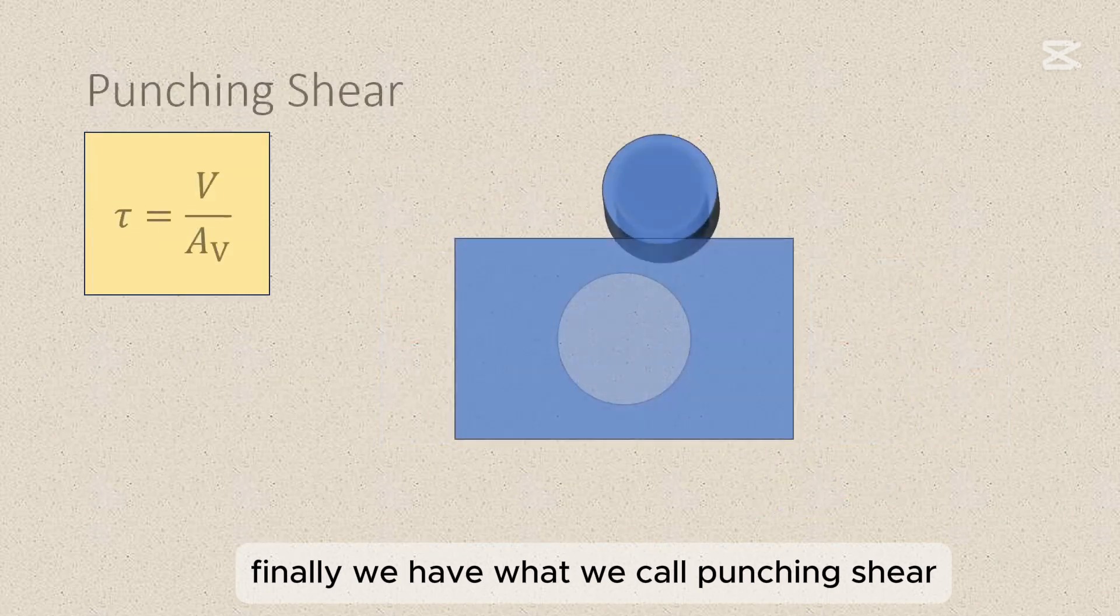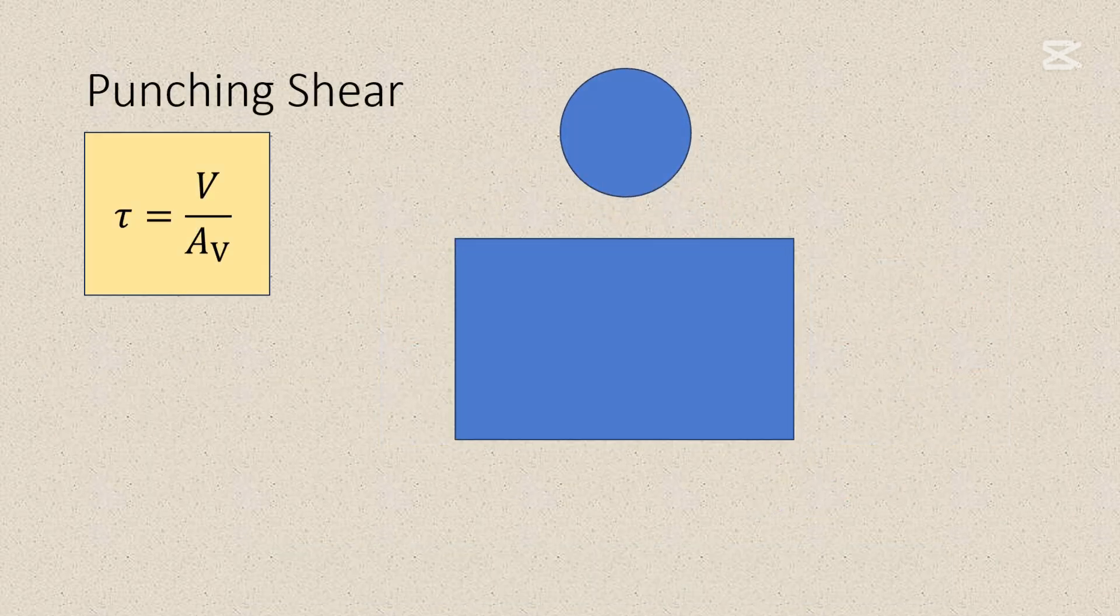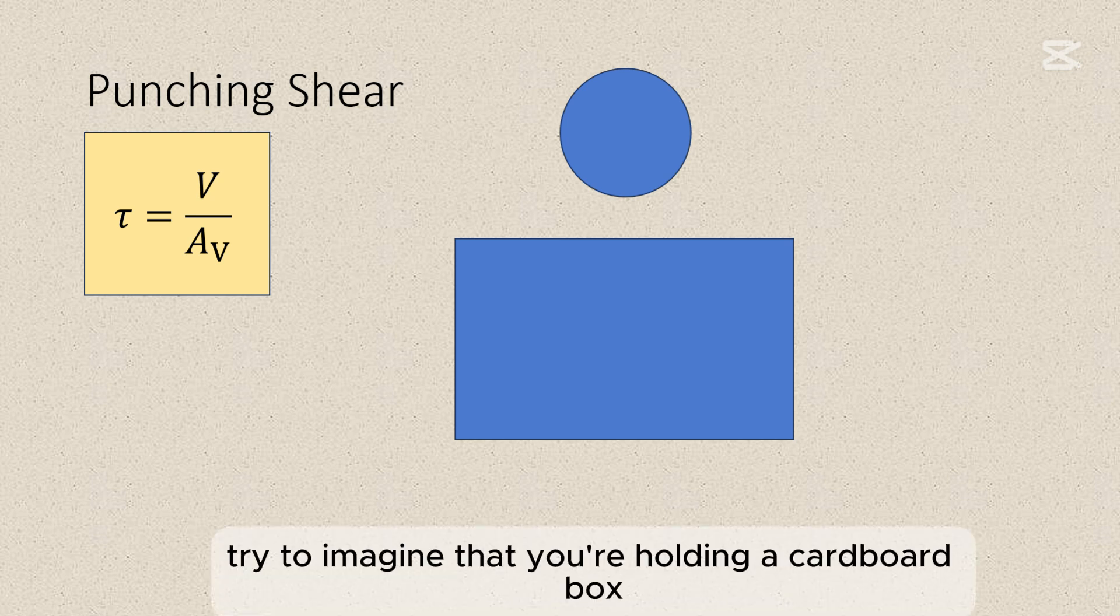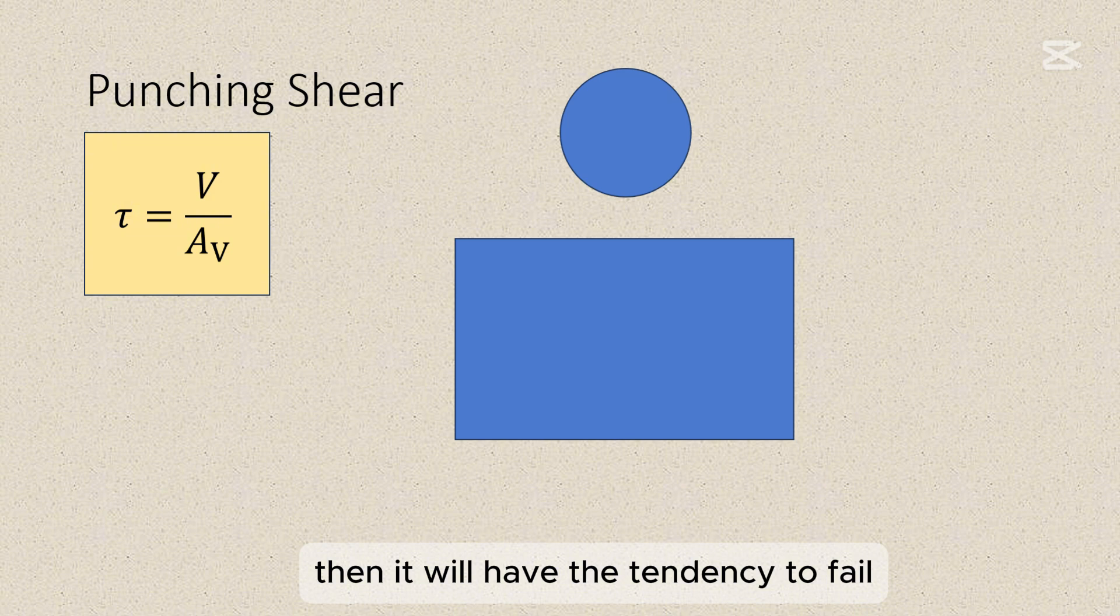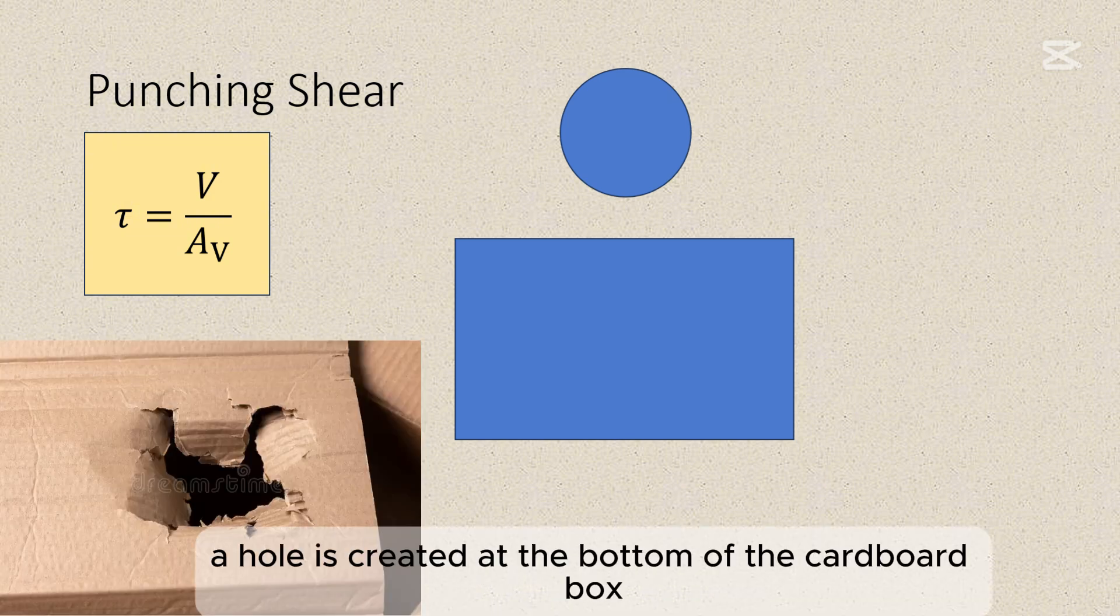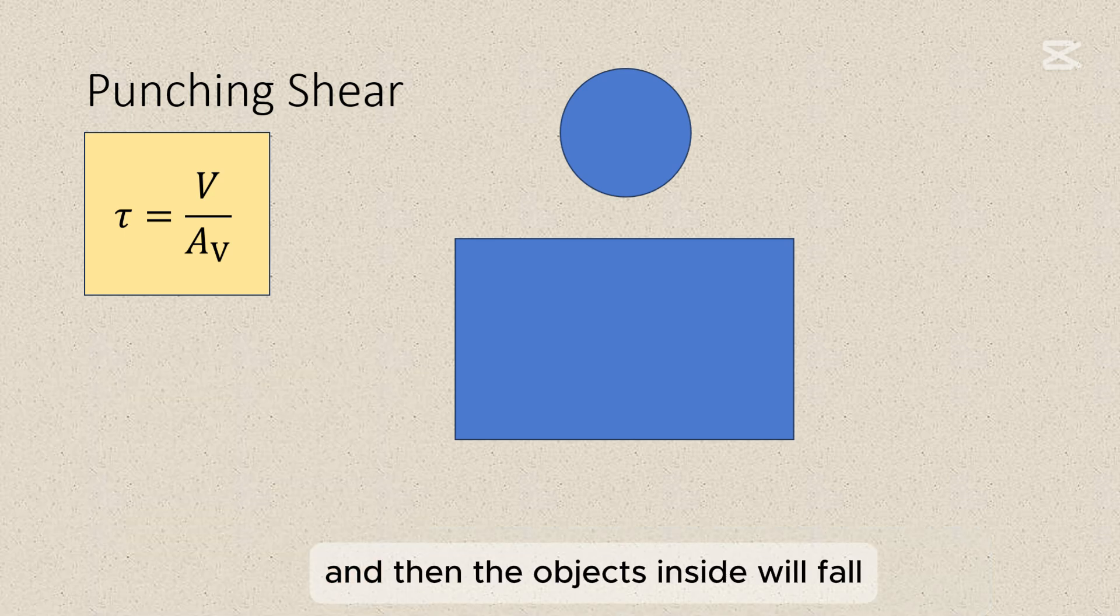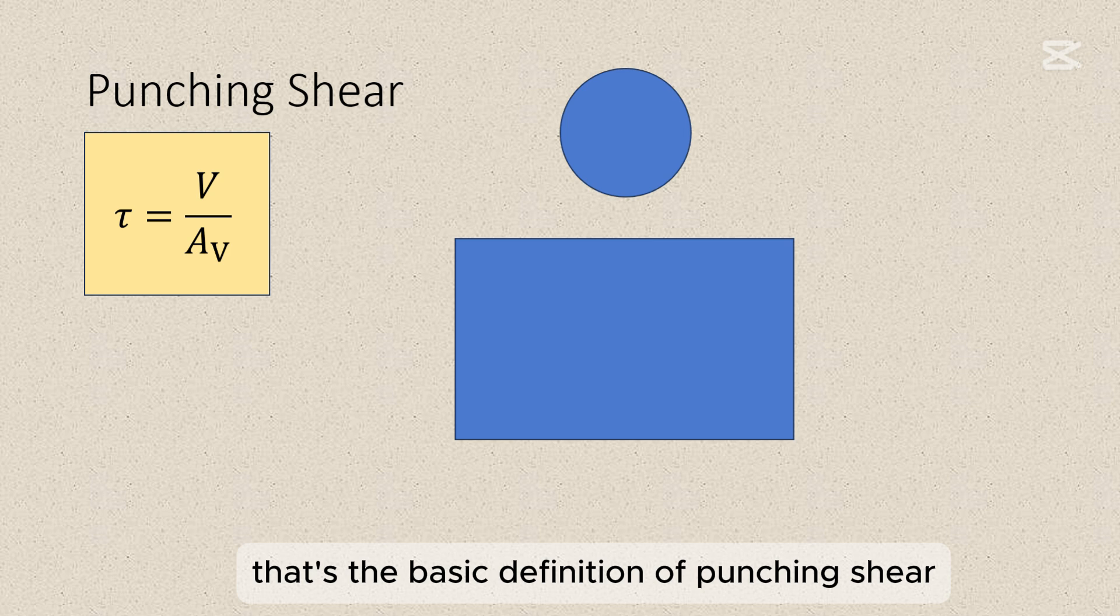Finally, we have what we call punching shear. Now to understand this, try to imagine that you're holding a cardboard box with a lot of things inside it. If you will not support the cardboard box at the base then it will have the tendency to fail by shearing around the point of contact. And therefore a hole is created at the bottom of the cardboard box and then the objects inside will fall. That's the basic definition of punching shear.